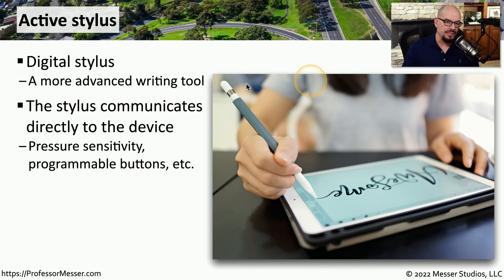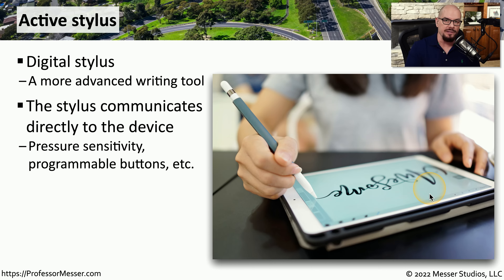The active stylus is able to communicate independently with the device that's being used, even if those two devices are not touching each other. When you do touch the pen to the device, the pen can recognize how much pressure you're using on the screen and can change what you're displaying as you're writing.